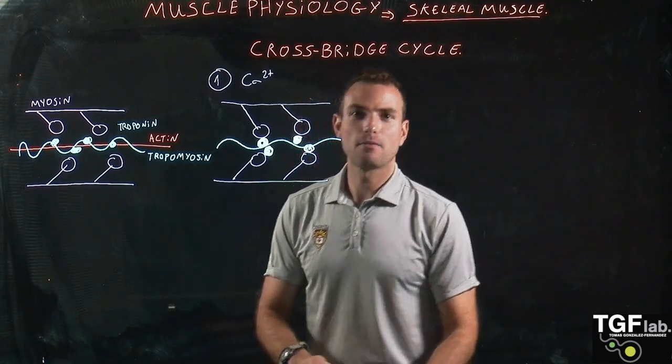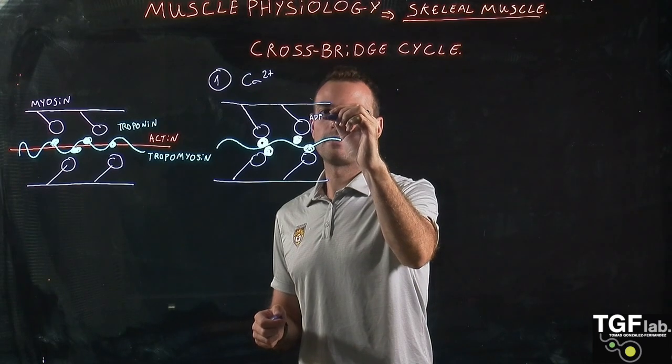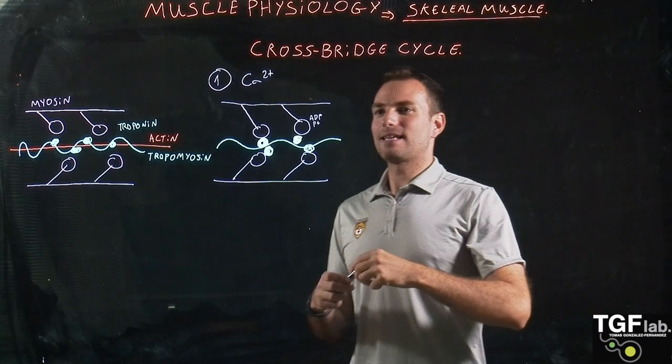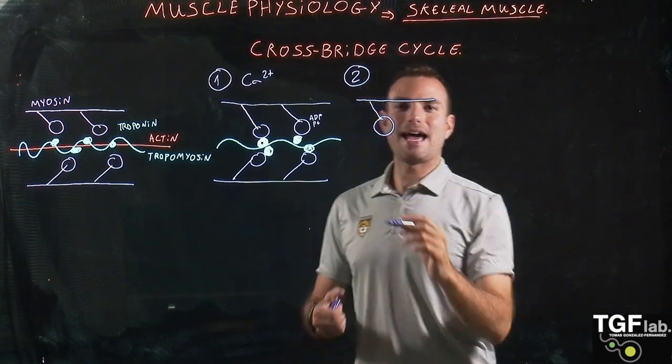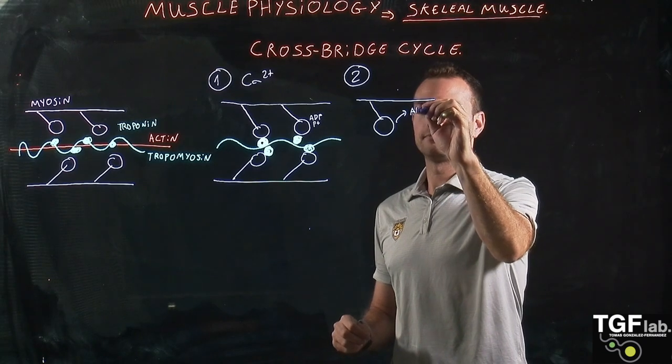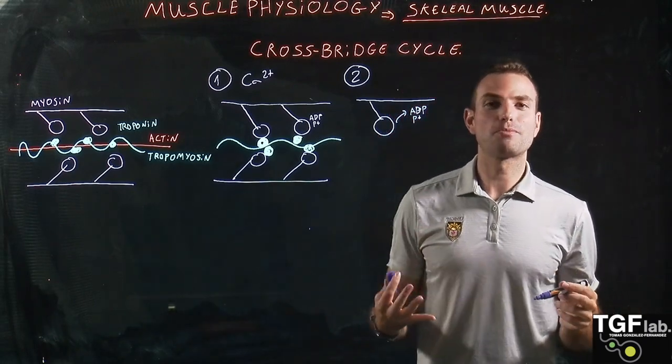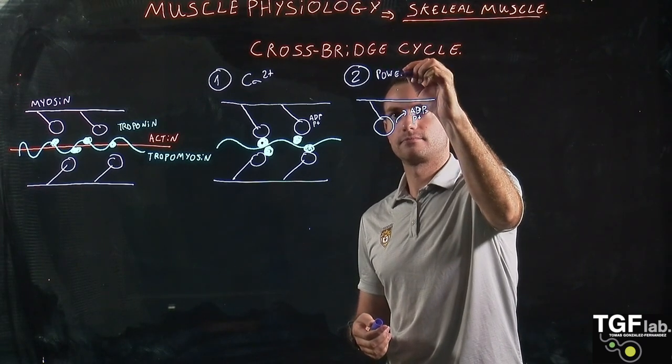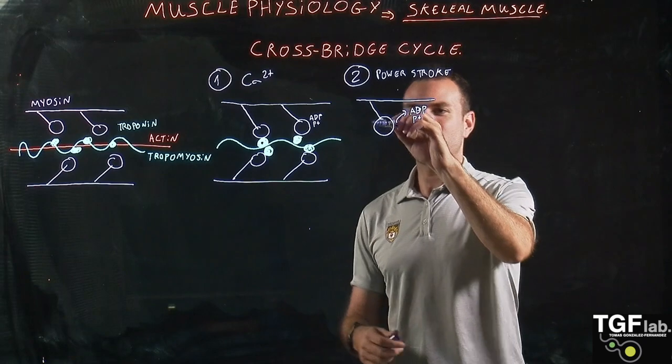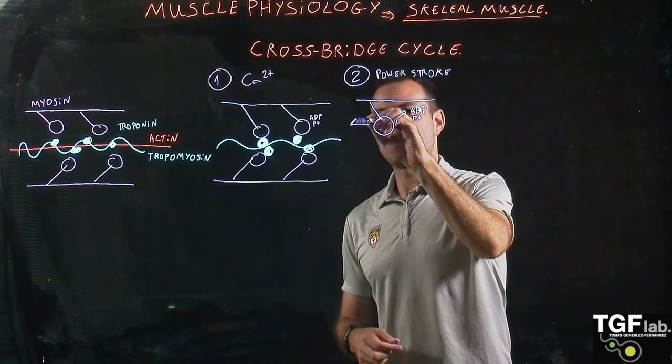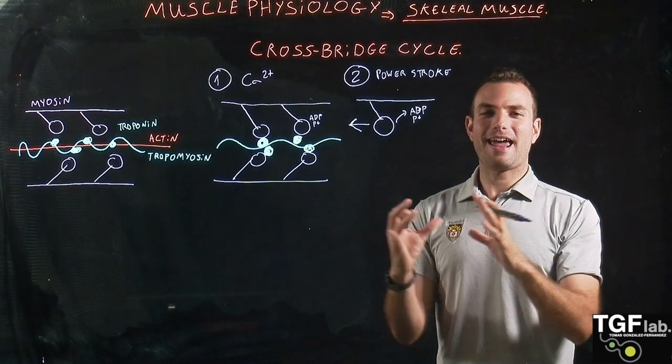So by this binding what is going to happen is that the myosin here, the head of the myosin, is linked to ADP and phosphate. So this is what is going to go next. So what is going to happen by this binding is that the ADP and the phosphate are going to be liberated from the myosin head. And that's going to produce a power stroke. So this power stroke, this release of energy, is going to move the myosin, the head of the myosin towards the M band of the sarcomere. So that's going to allow the contraction and the generation of tension.